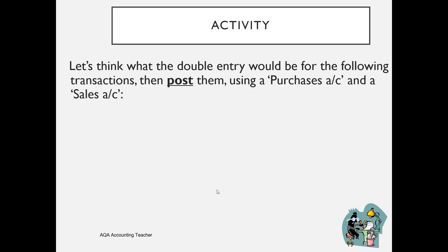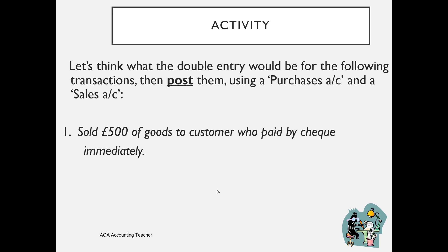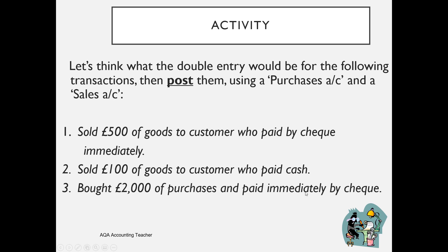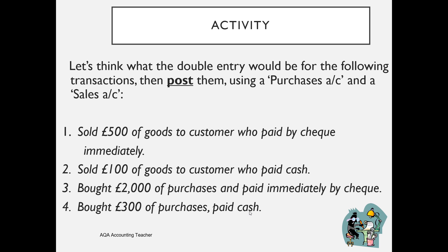Let's think about the double entry for the following transactions and then post them using a purchases account and a sales account. If we sell £500 worth of goods to a customer who paid by check immediately, we debit the bank account and credit the sales revenue account. Selling £100 of goods to a customer who paid in cash: debit the cash account and credit sales. Buying £2,000 worth of purchases paid immediately by check: debit purchases and credit the bank account. And £300 worth of purchases paid in cash: debit purchases and credit cash.